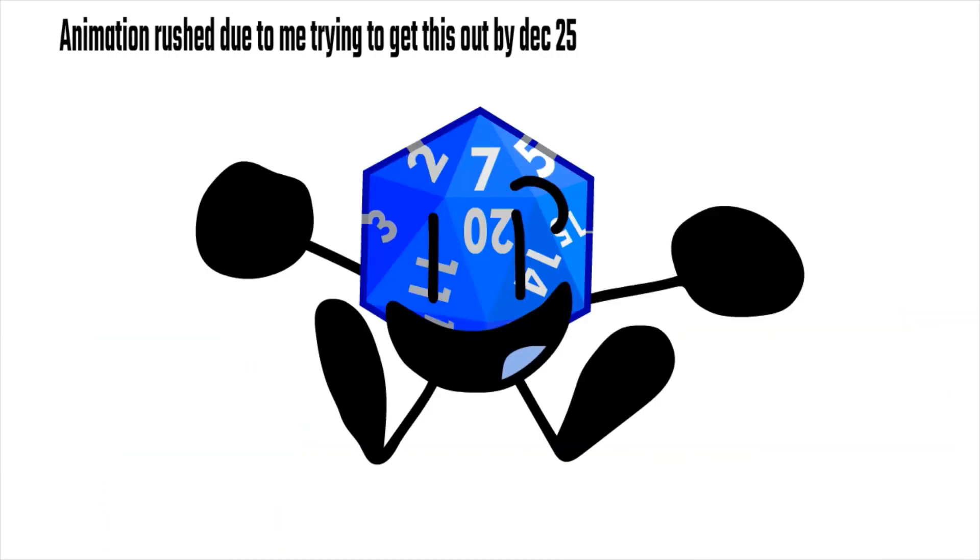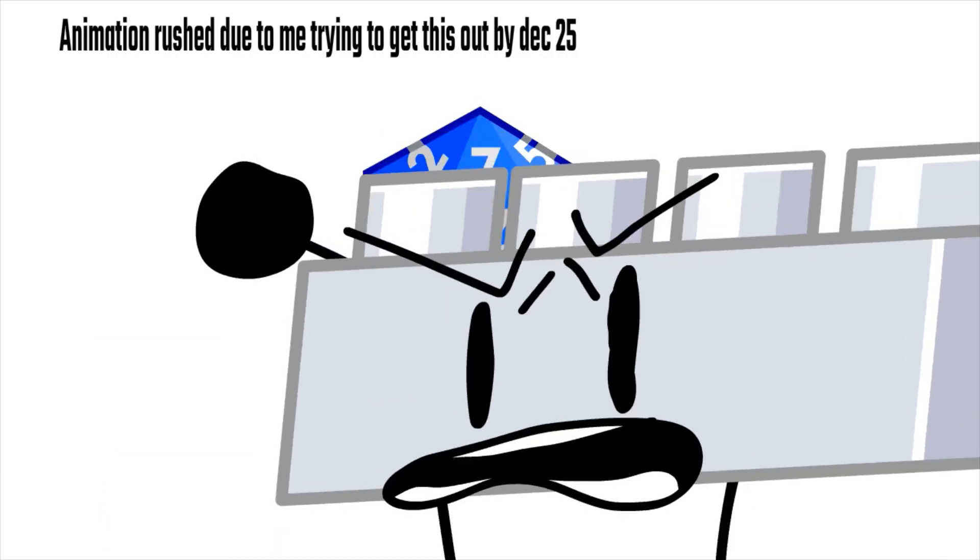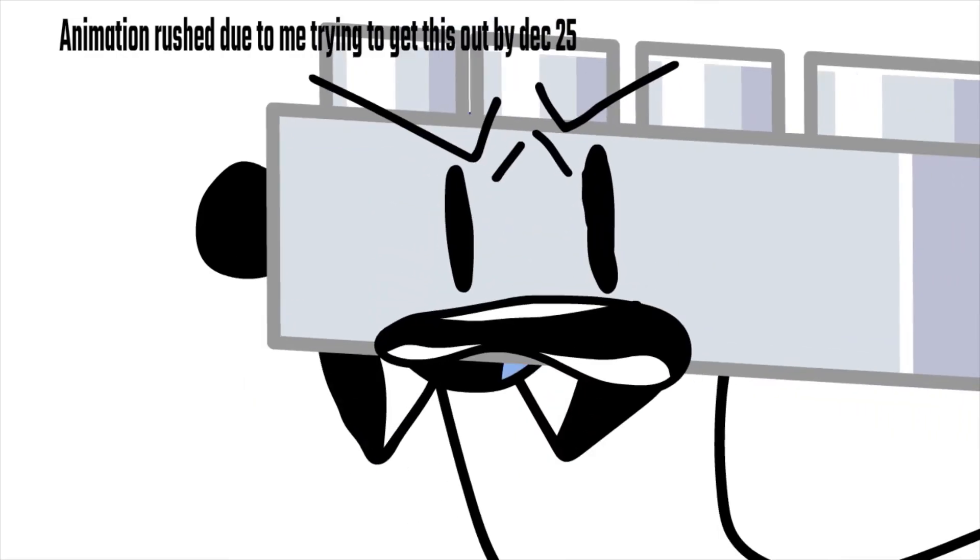Fine. Yay, so anyone want to make an alliance? No, show the voting screen. Vote someone out by using the letters and square brackets within the description. Whoever gets the most votes will die. Bye.